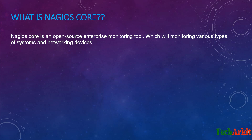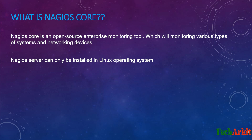Nagios is basically an open source enterprise monitoring tool — completely open source and free, with no license required to implement the Nagios Core monitoring tool. The Nagios server can only be installed on a Linux operating system; it is not made for Windows. However, you can monitor Windows operating systems and Windows components and services using the Nagios agent.